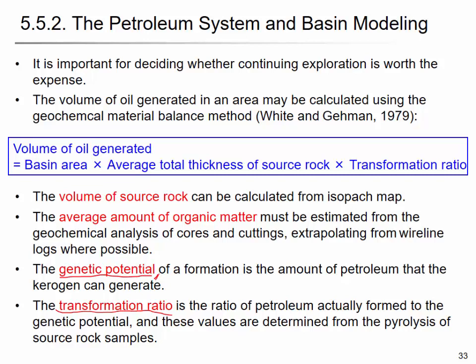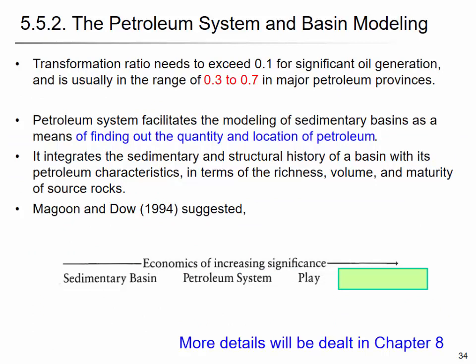So, if you have one cubic meter of shale as source rock, you estimate how much kerogen is in it, and from that kerogen, how much oil you get — those are what the generation potential and transformation ratio describe. A higher transformation ratio means a more prospective reservoir or basin. The petroleum system facilitates modeling of sedimentary basins to find the quantity and location of petroleum. From basin to petroleum system to play to prospect, you are thinking about the economics of producing hydrocarbons. This will be discussed further in chapter eight after the midterm.